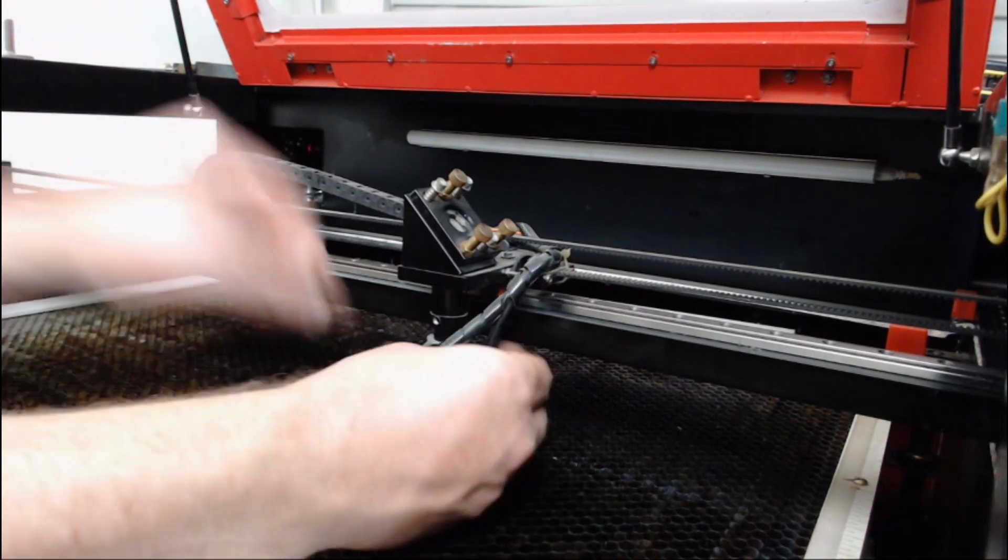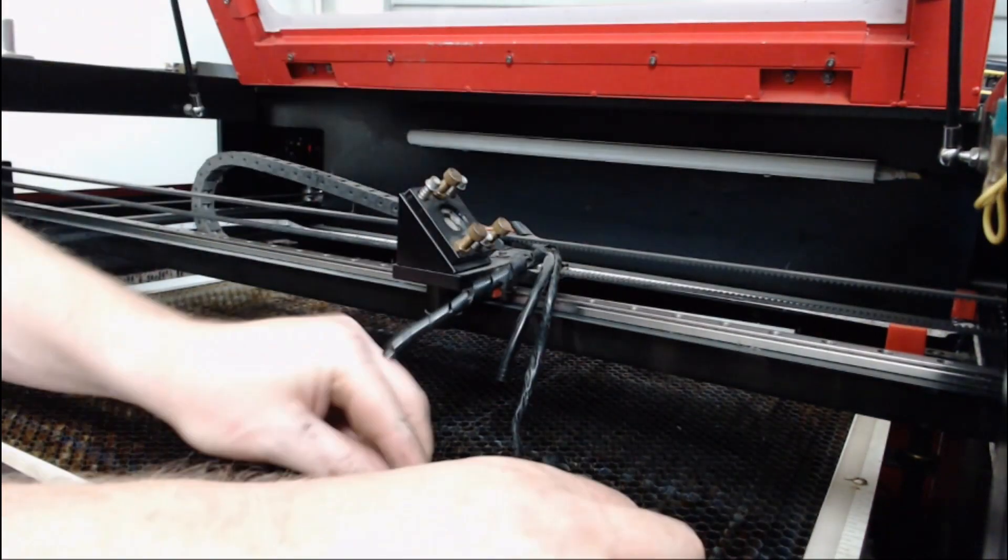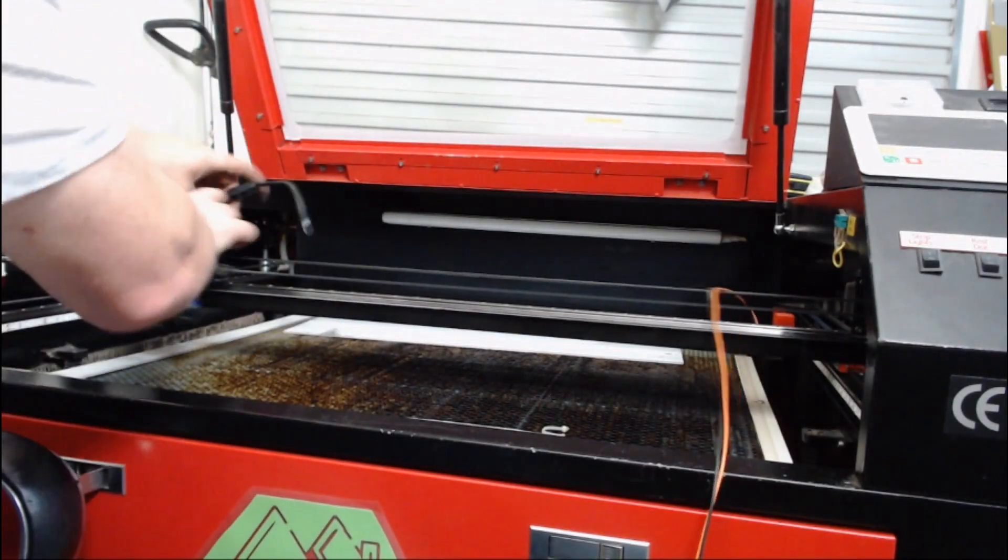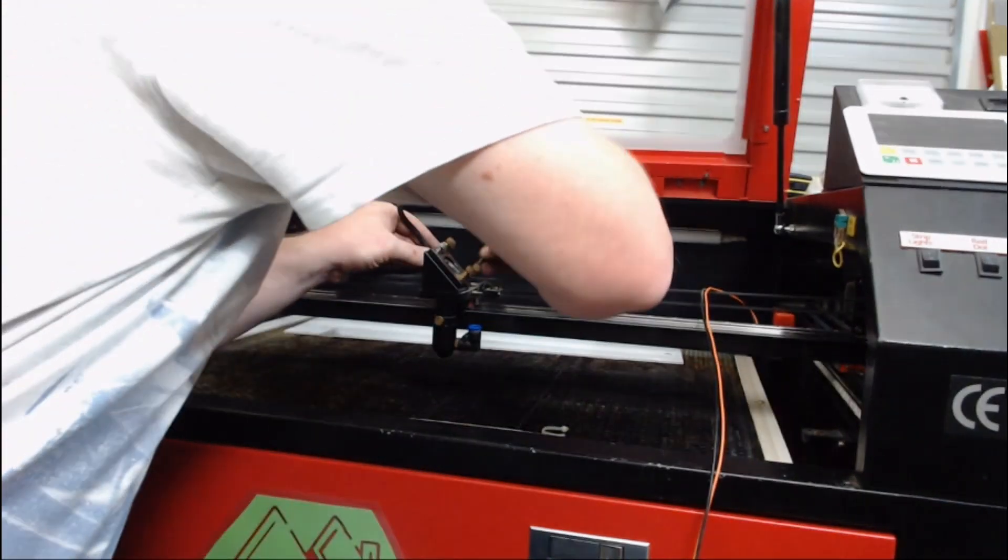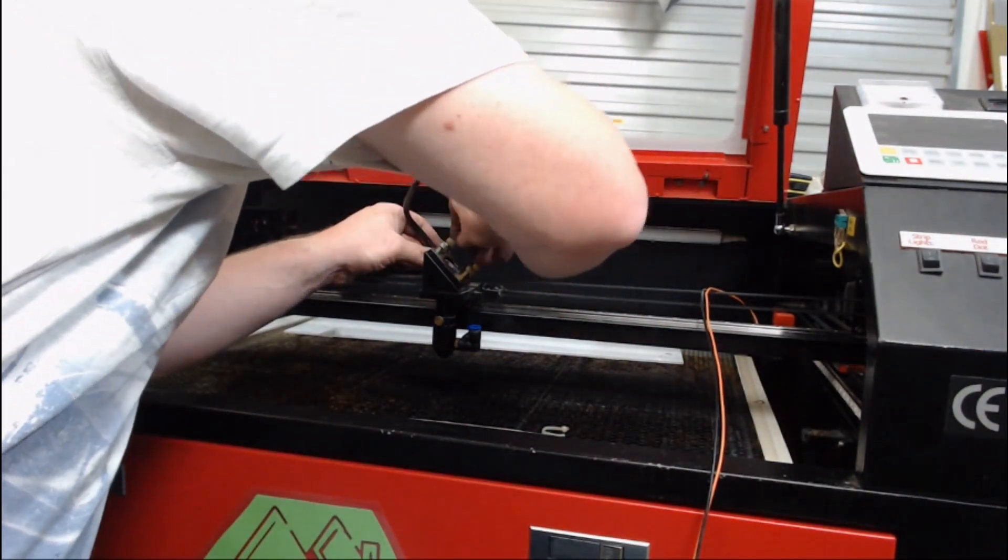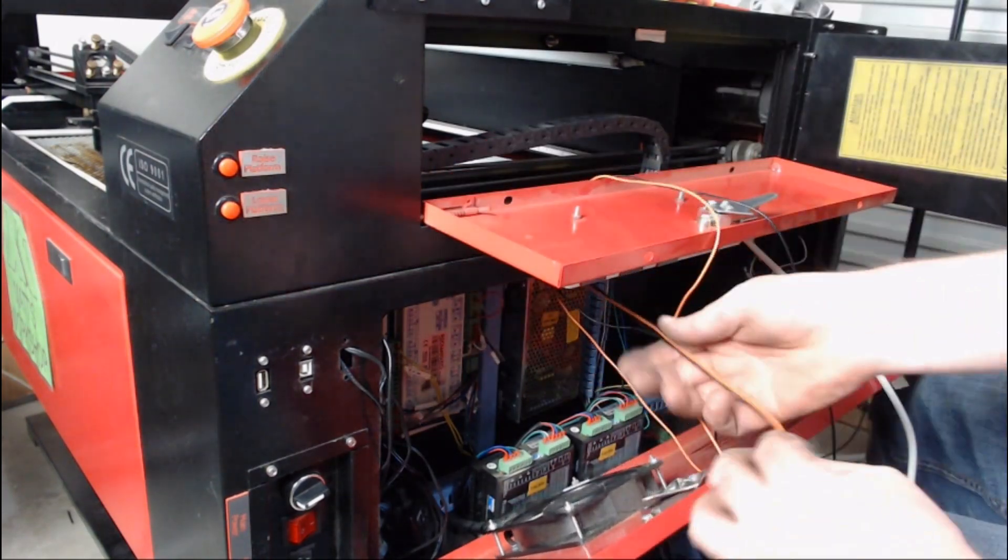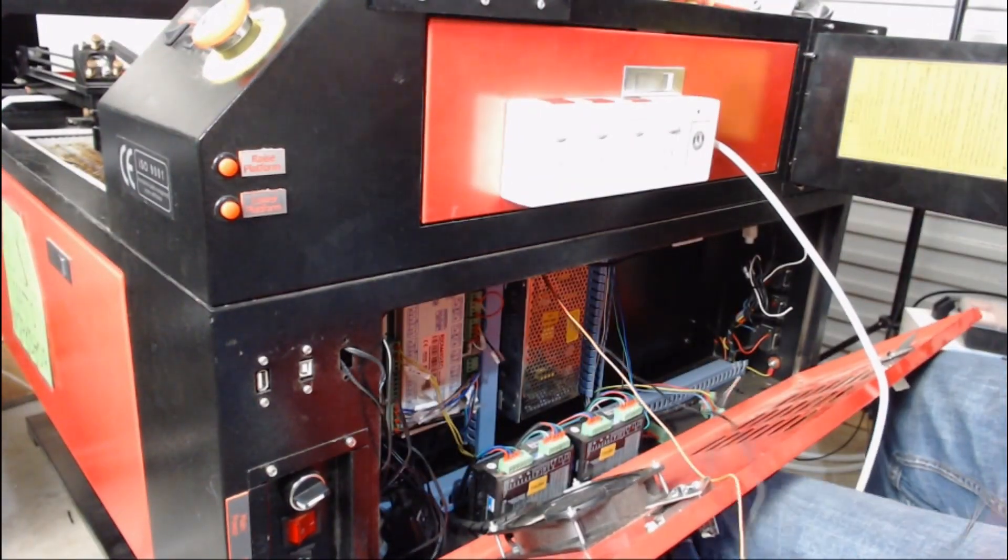So it was time to remove the old red dot pointer from the carriage. So I removed the pointer, disconnected the wires, removed those wires from the carriage rails, and then fed them through to the back of the machine. Now these two wires connected to the 5 volt power supply, and I used those to power the new red dot laser.